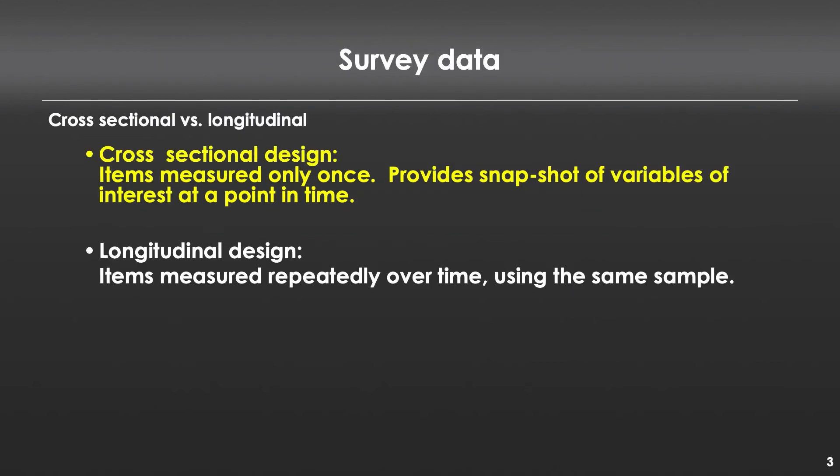Cross-sectional data in a survey context is where we collect data in a snapshot in time from a group of people. We can do that multiple times, but each time it would be a new group of people and a new snapshot in time.